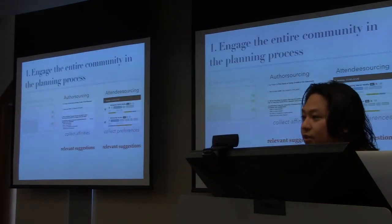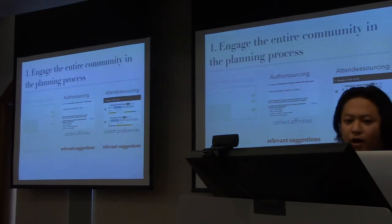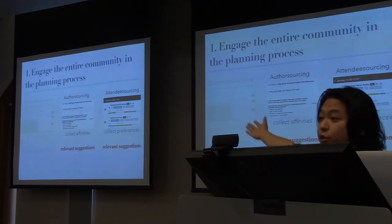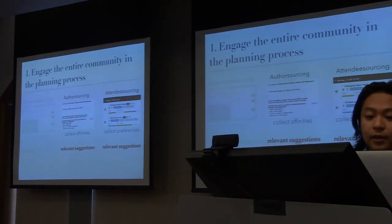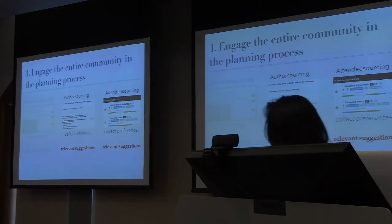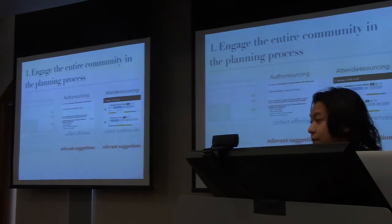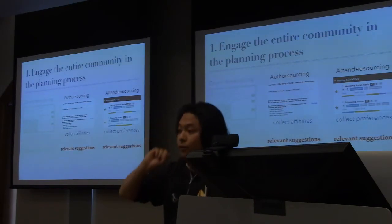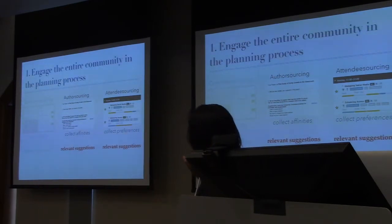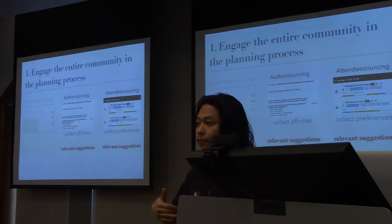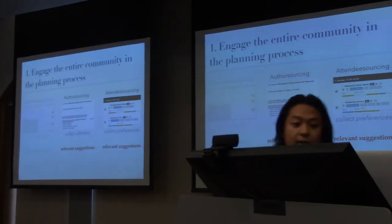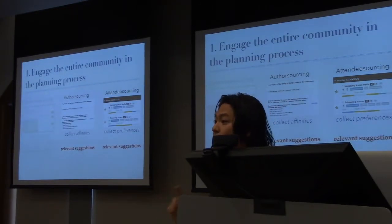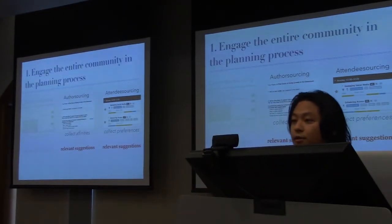Coming back to the challenge of engaging the community — for authors and attendees, we need ways to provide relevant suggestions if the systems are going to be of any use. We could treat these as isolated problems and use machine-based approaches: TF-IDF for author sourcing to find relevant papers, or collaborative filtering for attendee sourcing. What I'm going to argue is that's great, you could do that — but we could do better with a computational ecosystems approach.